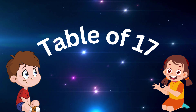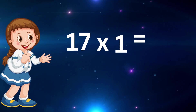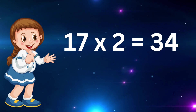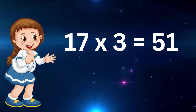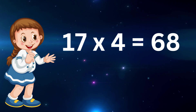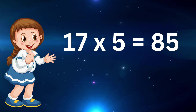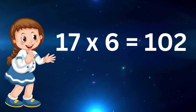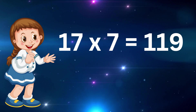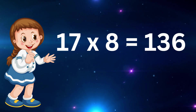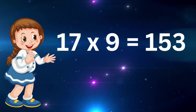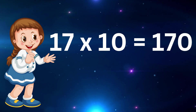Table of seventeen: seventeen one's are seventeen, seventeen two's are thirty-four, seventeen three's are fifty-one, seventeen four's are sixty-eight, seventeen five's are eighty-five, seventeen six's are one hundred two, seventeen seven's are one hundred nineteen, seventeen eight's are one hundred thirty-six, seventeen nine's are one hundred fifty-three, seventeen ten's are one hundred seventy.